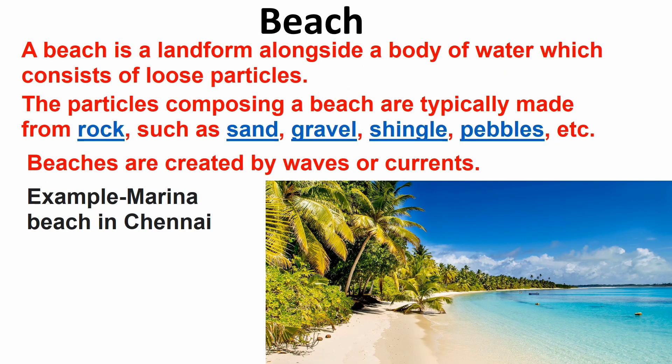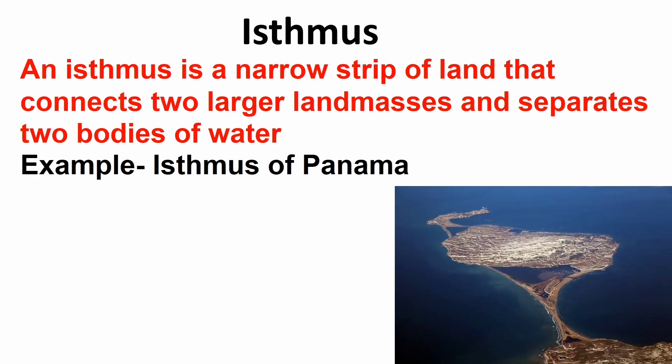Beach: A beach is a landform alongside a body of water which consists of loose particles. The particles composing a beach are typically made from rock such as sand, gravel, shingles, pebbles, etc. Beaches are created by waves and currents. Example, Marina Beach in Chennai.